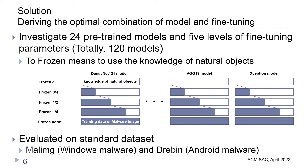Next, we describe the solution: delivering the optimal combination of model and fine-tuning. We investigated 24 pre-trained models and 5 levels of fine-tuning parameters, giving a total of 120 models. The figure shows the fine-tuned CNN models. 'Fully frozen' means using the knowledge of natural objects. These models are evaluated on standard datasets such as Marl-IMG for Windows malware and Drebin for Android malware.